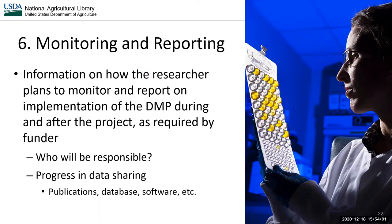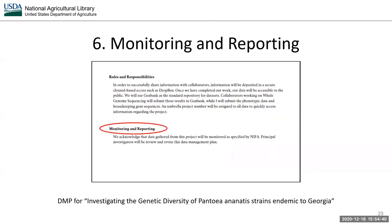The final section, the monitoring and reporting section, contains information on how the researcher plans to monitor and report on the implementation of the DMP during and after the project as required by funders. This may include progress in data sharing, including publications, databases, software, and so on. The plan should also indicate who is responsible for this duty. Cataloging everything in the Ag Data Commons should help researchers easily pull together a list of data products shared from a particular project.